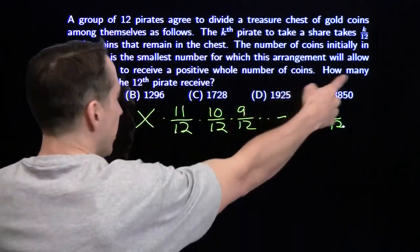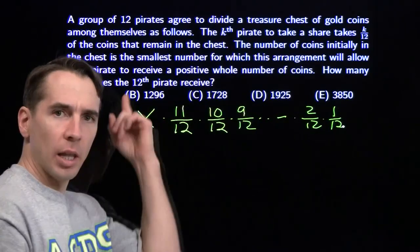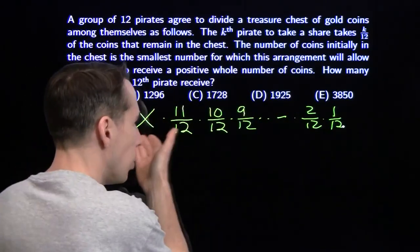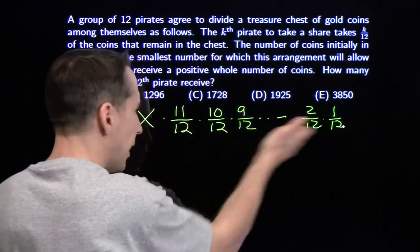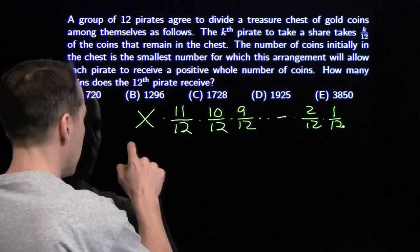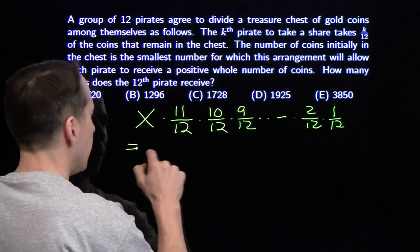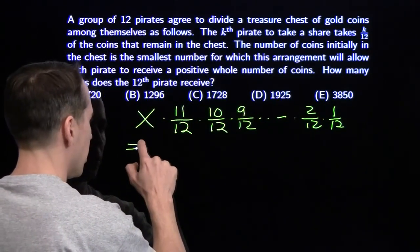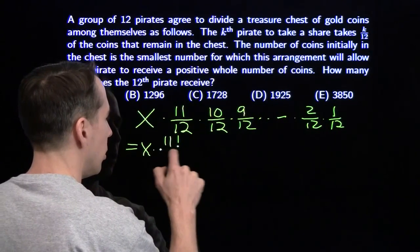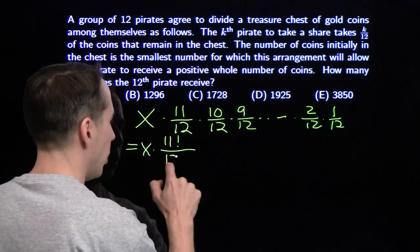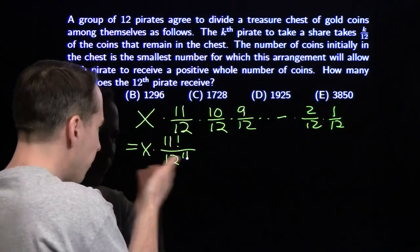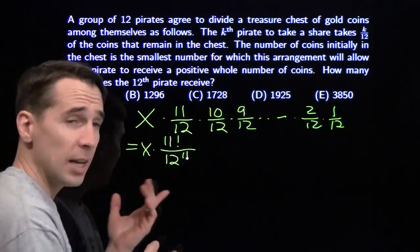That's what we want to figure out — how much does the last pirate receive? We want to figure out the value of this expression, which we can write more compactly as X times 11 factorial over 12 to the 11th. And we want to figure out what this equals.